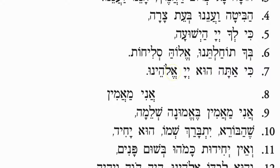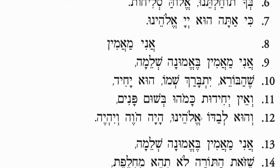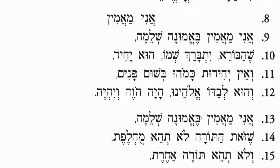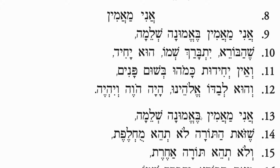Now we have some Ani Ma'mins. The Ani Ma'min comes from the Rambam — Maimonides, Rav Moshe ben Maimon, a Spanish-Egyptian rabbi. He composed a famous commentary on the Mishnah, as well as many other famous books, and the Ani Ma'mins come from that commentary on the Mishnah.